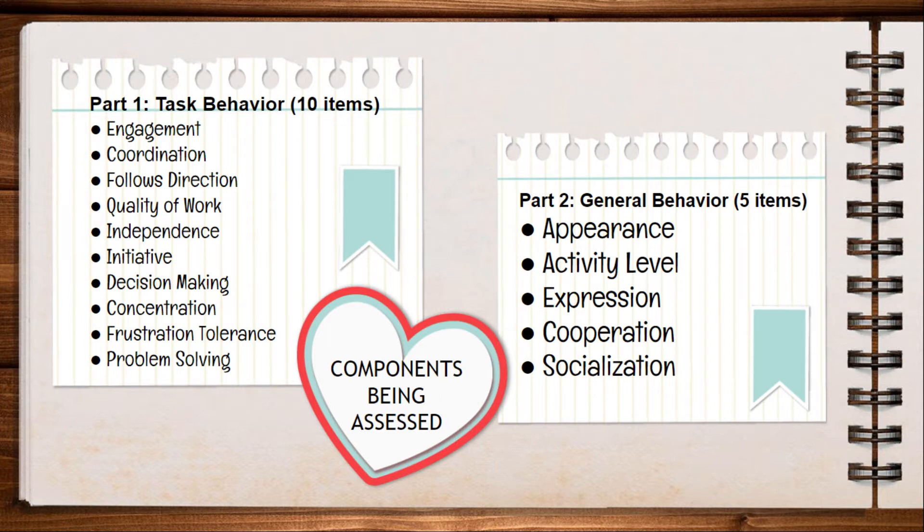The remaining task behavior items are initiative, decision making, concentration, frustration tolerance, and problem solving. For general behavior, which consists of 5 items, it assesses appearance, activity level, expression, cooperation, and socialization.